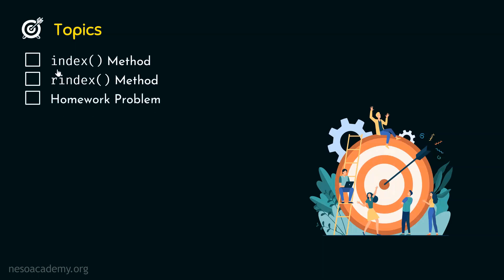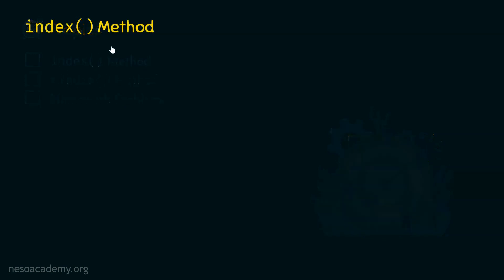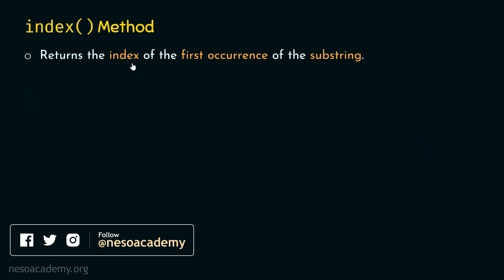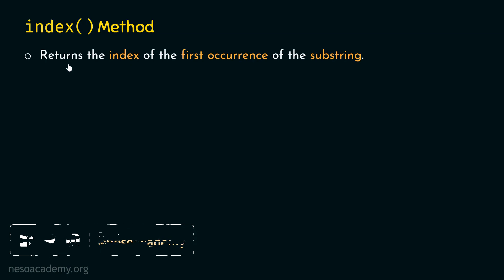Let's start with the first topic called the index method. The index method returns the index of the first occurrence of the substring. The index method works exactly the same as the find method, which we have seen in the last lecture — it also returns the index of the first occurrence of the substring.